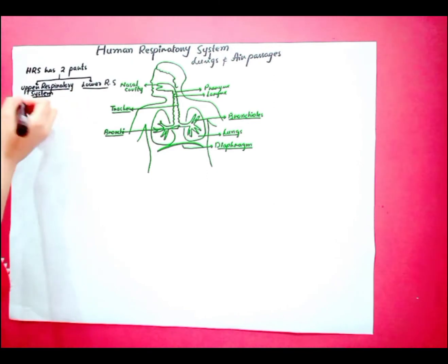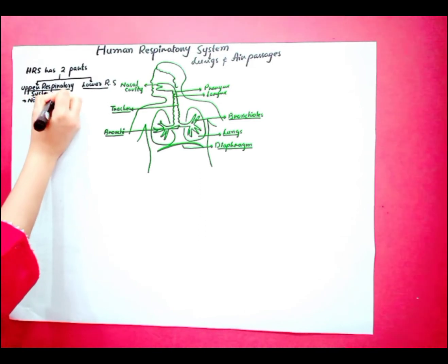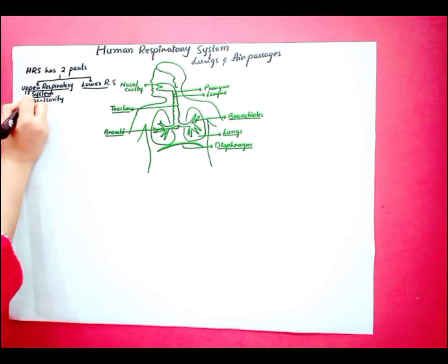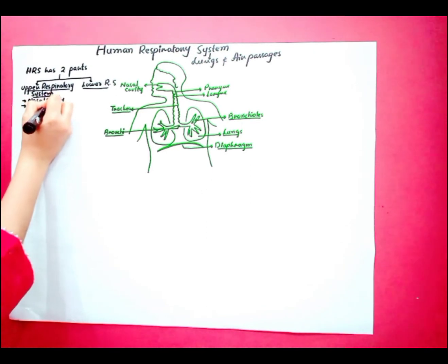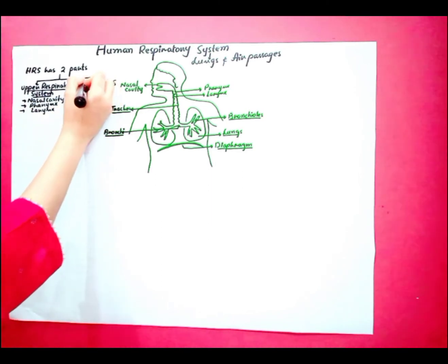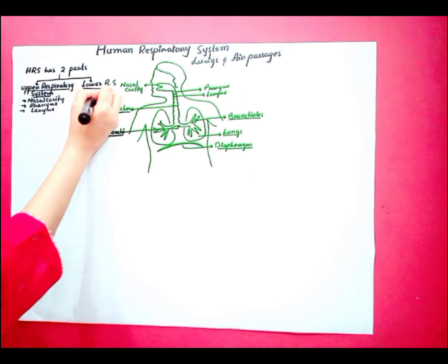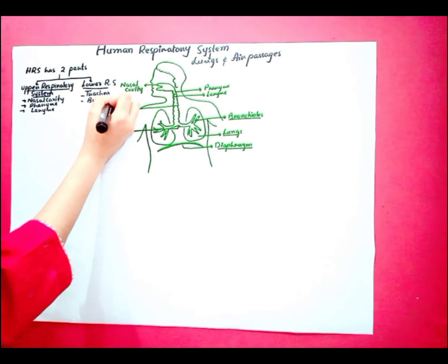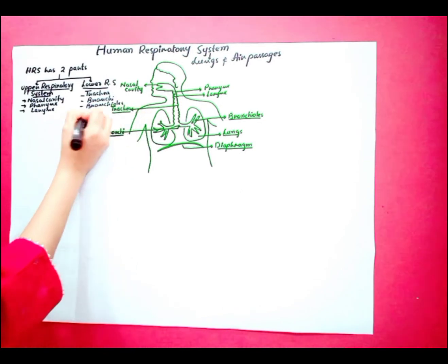The upper respiratory system consists of nasal cavity, pharynx, and larynx, while the lower respiratory system consists of trachea, which is also called windpipe, bronchi, bronchioles, and lungs.